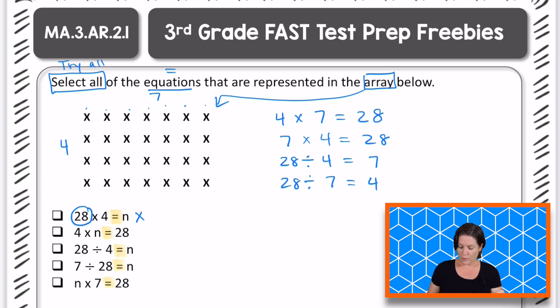The next one, four times N equals 28. So four times N, N right there is a variable and N is the variable for all of these. And N in this case represents which value. Seven, right? Four times seven. That's this one right here. Four times seven equals 28, where the value of N equals seven. So we can go ahead and keep this answer choice.